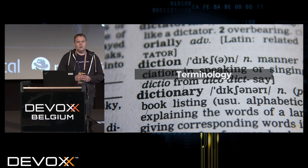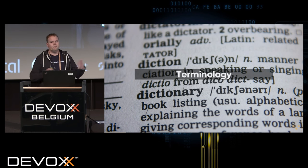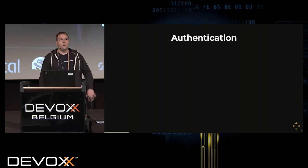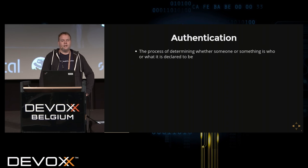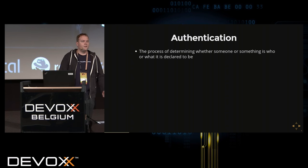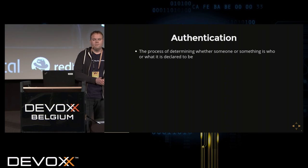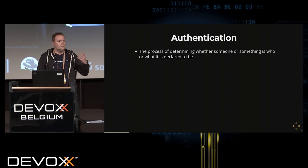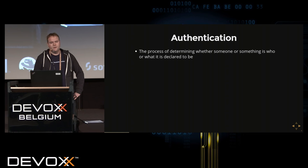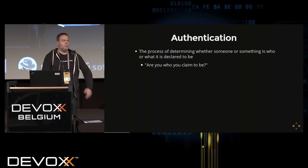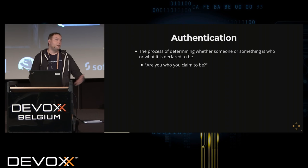Authentication and authorization are often not fully understood. Authentication is the process of determining whether someone or something is who or what it is declared to be — so that you can establish the identity of a thing or a person. This is important because otherwise someone could claim to be a policeman and demand money from you even if they aren't.